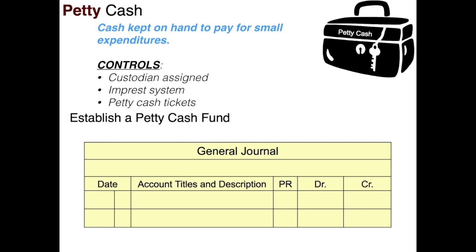The first thing we have to do when using a petty cash fund is to establish the fund. You determine what amount you want held — $200, $300, $500, $1,000, whatever the case may be — and you make a transaction. The money comes out of your cash account and into petty cash. So the transaction is: credit the cash account for the amount, and debit petty cash for that same amount. Now you've effectively created the petty cash fund.